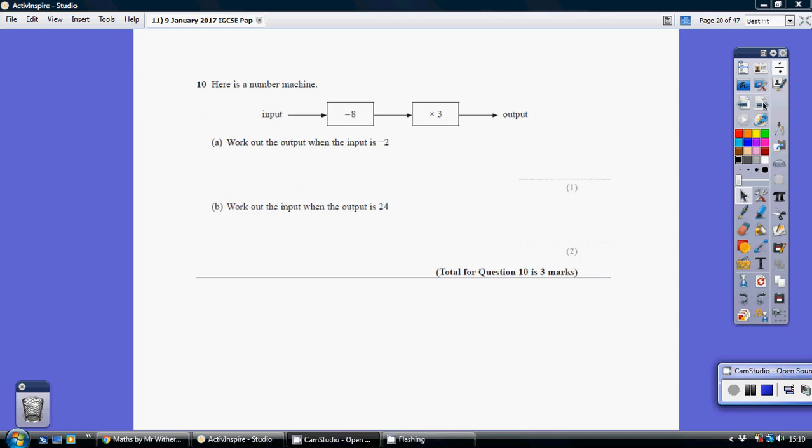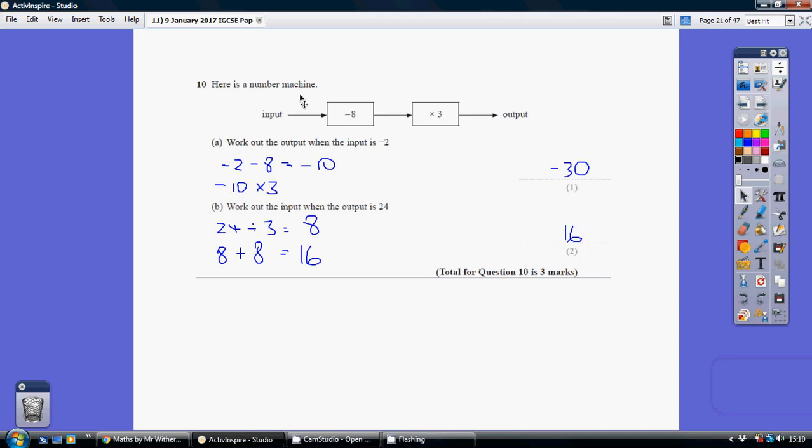Number 10. Using this number machine, work out the output when the input is -2. So take your -2 and take away 8 from it, that gives us -10. Then take your -10 and multiply it by 3 and you get -30.